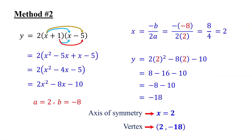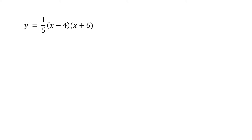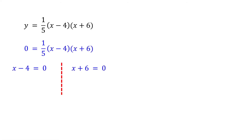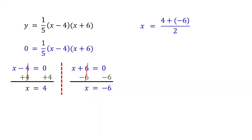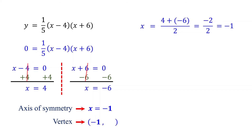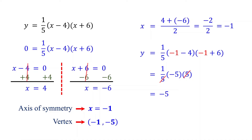An alternative method is to first convert the factored form to standard form and then follow the same steps used in the first example. Now try this one. Find the axis of symmetry using the x-intercepts: set y equal to 0, then set each factor equal to 0. Solving gives x equals 4 and x equals negative 6. Adding the x-intercepts and dividing by 2 simplifies to negative 1. Therefore, the axis of symmetry is x equals negative 1, and the x-coordinate of the vertex is negative 1. Substituting negative 1 for x into the original function gives negative 5. Therefore, the vertex is the point negative 1 comma negative 5.